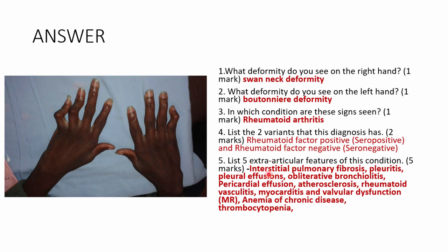Extra-articular manifestations of rheumatoid arthritis can affect the CNS, cardiovascular system, and respiratory system. Respiratory: interstitial pulmonary fibrosis, pleuritis, pleural effusions, obliterative bronchiolitis. Cardiovascular: pericardial effusions, atherosclerosis, rheumatoid vasculitis, myocarditis, valvular dysfunction (e.g., mitral regurgitation). Haematological: anemia of chronic disease, thrombocytopenia. Pick any five — you should know at least ten extra-articular manifestations.